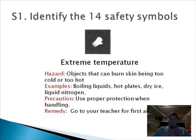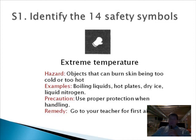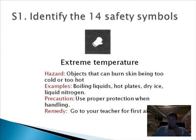The next symbol is the extreme temperature symbol. It's a simple symbol that looks like an oven mitt — so when you see an oven mitt, think extreme temperature. You'll see this when dealing with something really hot or really cold, which poses a danger to your skin. Examples include boiling liquid, hot plates, dry ice, and liquid nitrogen. Use common sense and wear protective gloves. If you get a burn, let the teacher know and we will provide first aid.